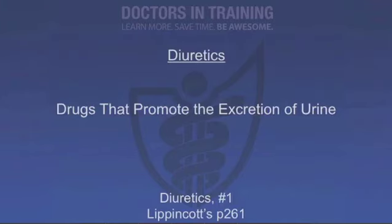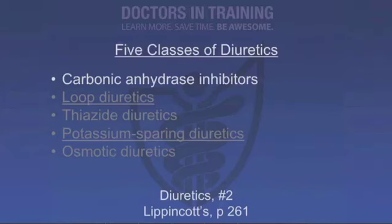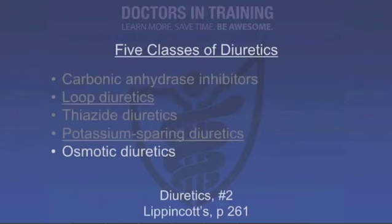So, what are diuretics? Diuretics are drugs that promote the excretion of urine or increase the amount of urine excreted — that's straight out of Stedman's Dictionary. There are five major classes of diuretic therapy: the carbonic anhydrase inhibitors, loop diuretics, thiazides, potassium-sparing diuretics, and osmotic diuretics. We're going to spend a few minutes going through each one of those classes today.